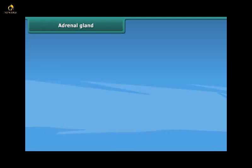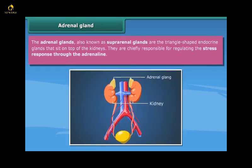Adrenal glands, also known as suprarenal glands, are the triangle-shaped endocrine glands that sit on top of the kidneys. They are chiefly responsible for regulating the stress response through adrenaline.